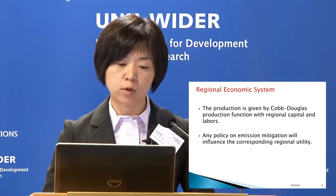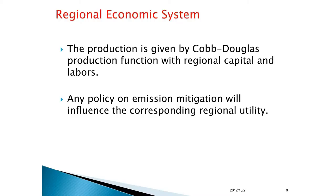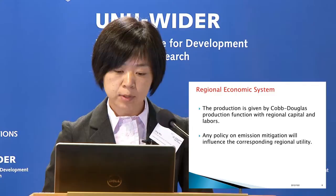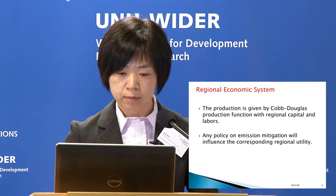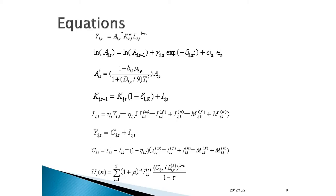Now I will introduce these components in detail. Firstly, the regional economic system. The production in our model is given by the Cobb-Douglas production function with regional capital and labor. Any emission reduction policy will influence the corresponding regional utility. Here are the equations in this module — the first one is for production, and the last one is for utility.